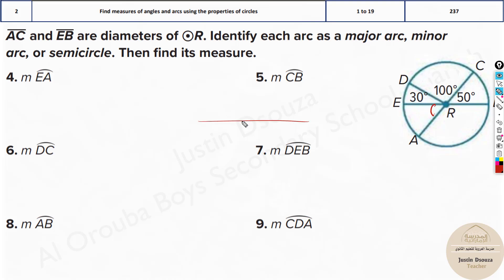Whenever an arc is 180 degrees it is a semicircle. But if it is more than 180 degrees it is a major arc. And whichever is less than 180 it's a minor arc. Now how can you find the arc EA?